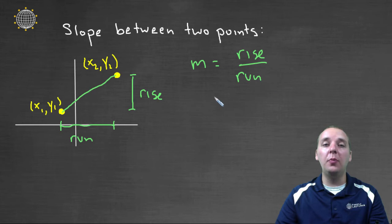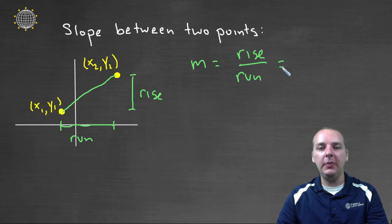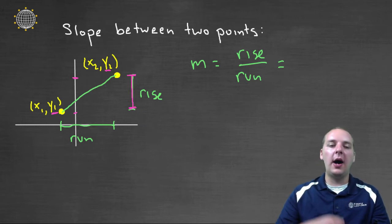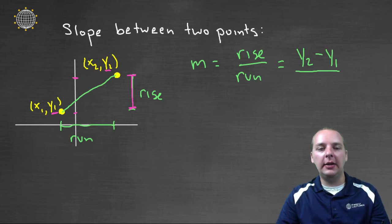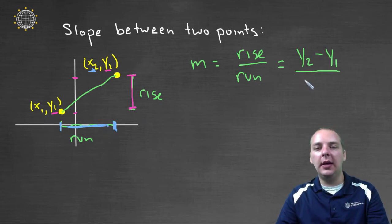Now I can actually give you a more specific formula than that. Let's think about it for a minute. If this guy has a height of Y2, and this point here has a height of Y1, then what is the rise from one point to another? Well, it would be Y2 minus Y1. So that'll be your numerator exactly, Y2 minus Y1, divided by, and let's do the same thing for the run. What's the horizontal distance between these two points? Well here is X2, and here is X1. So the run would be X2 minus X1.